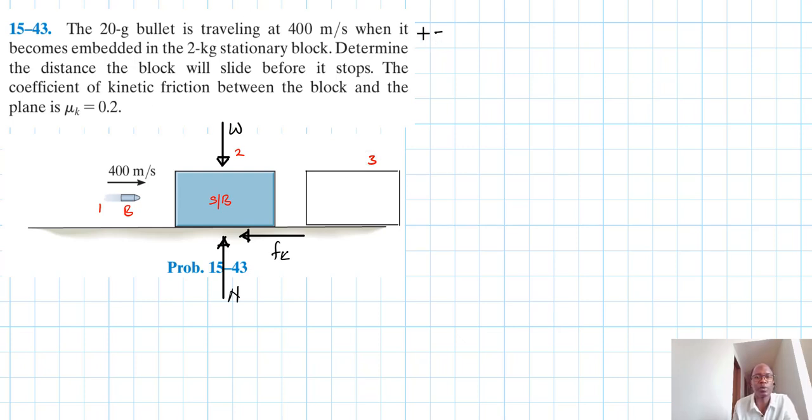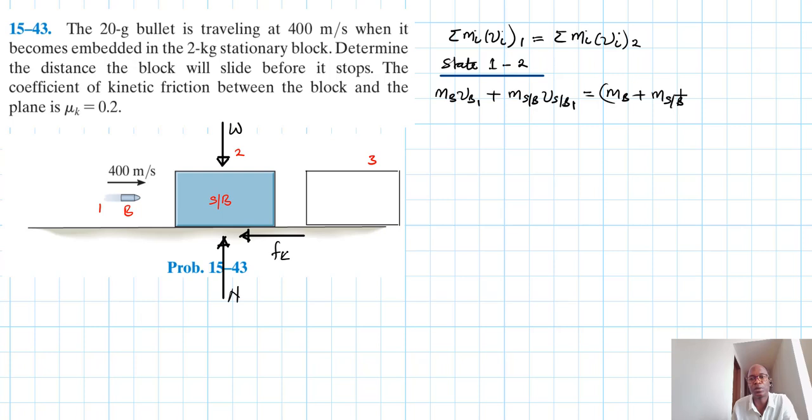So we have summation of masses in the first state, and this is equal to summation of masses in the second state. State 1 to 2, what do we have? We have MB VB1 plus M stationary block V stationary block 1. This is equal to MSB V2.